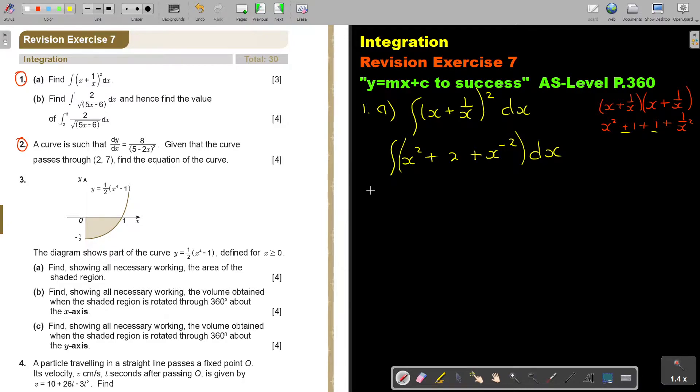Now I'm going to start. Remember, it's indefinite. So remember your plus C. So this is going to be x cubed over 3. This is going to get an x. This is going to be negative 2 plus 1, so it's negative 1. And I divide by negative 1 and I add C. So it's going to be x cubed over 3 plus 2x minus 1 over x plus C. And that will be my final answer.